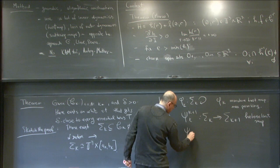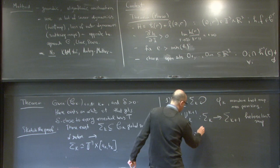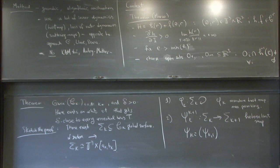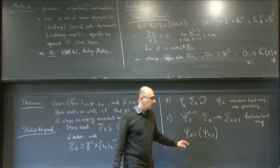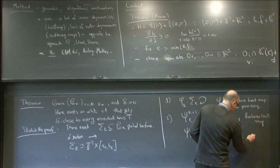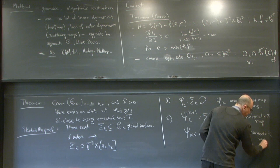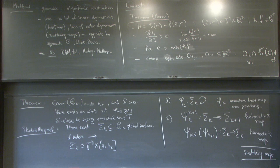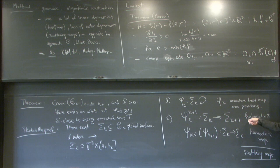There also exist homoclinic maps from each annulus to itself — when I write Ψ_k, I actually mean a possibly infinite family of homoclinic maps from an annulus to itself. These are all scattering maps: one type goes from the annulus to itself, and the other goes from one annulus to the next. The idea is the same: you go up along the unstable fiber to an intersection, and you go down along the stable fiber.